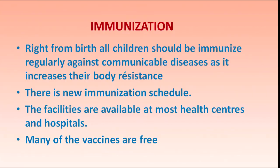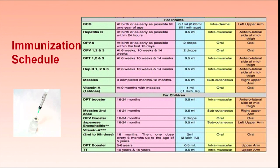Immunization protects the body from diseases. From birth, all children should be immunized regularly as per schedule against certain communicable diseases — it increases the body's resistance. New immunization schedules come from time to time, and facilities are available at most health centers and hospitals, with many vaccines available for free. Important vaccines include those for hepatitis — protecting the liver — polio, chickenpox, and measles. These are communicable diseases that can affect the child's health for life, so immunization is very important.